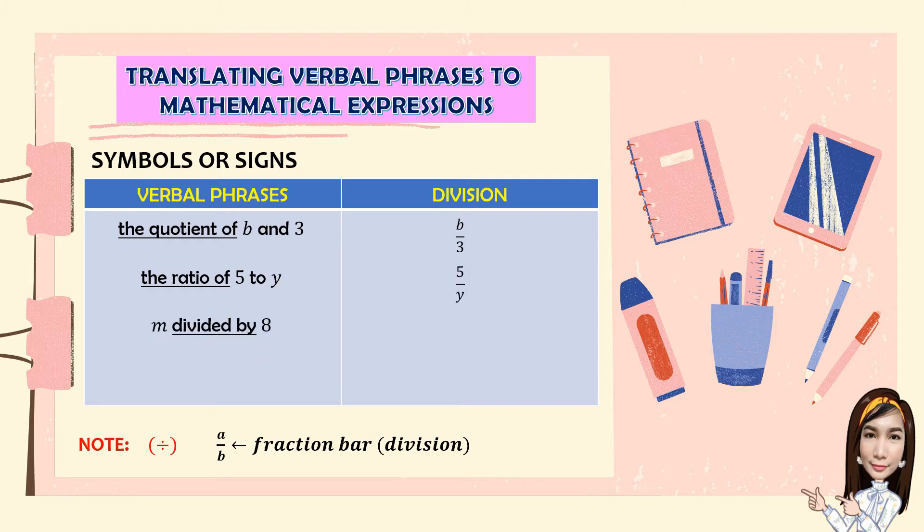M divided by 8, M over 8. 4 divided into X, X over 4.